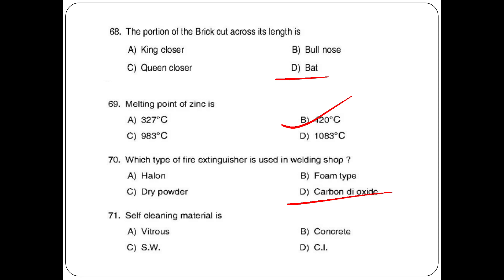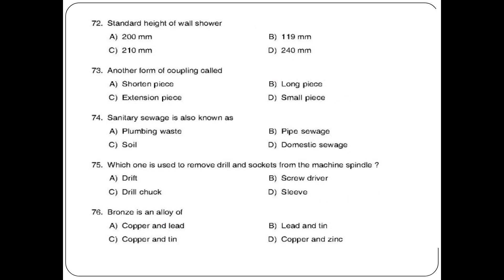Self-cleaning material is vitreous. Standard height of wall shower is 2100 mm. Another form of coupling is called — options: short piece, long piece, extension piece, small piece. The answer is option C: extension piece. Sanitary sewage is also known as option D: domestic sewage. Tool used to remove drill and socket from the machine spindle is option C: drift.